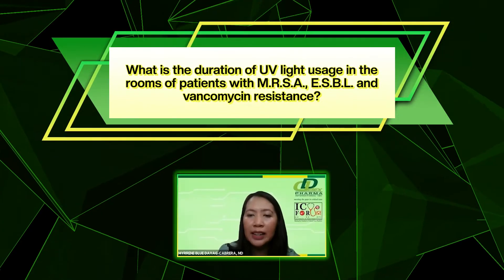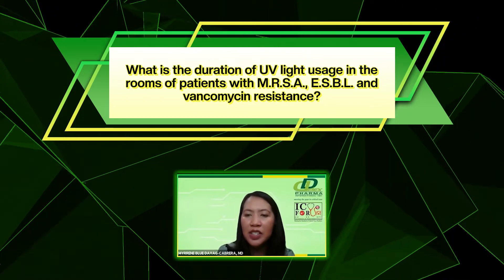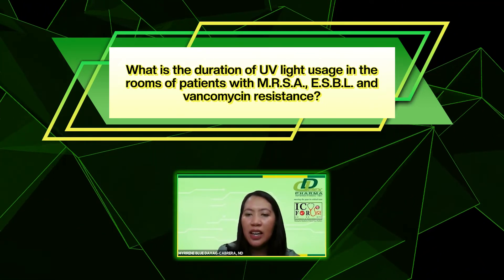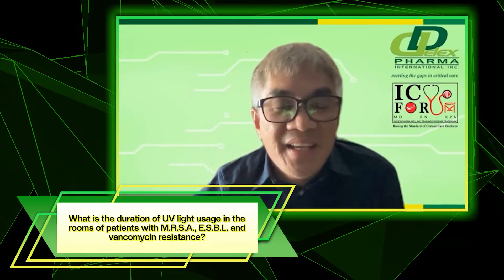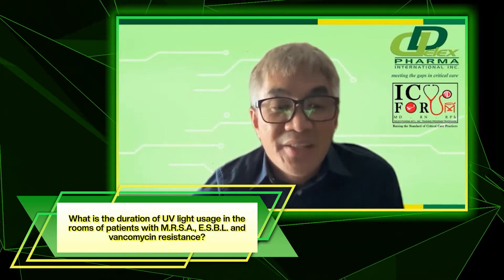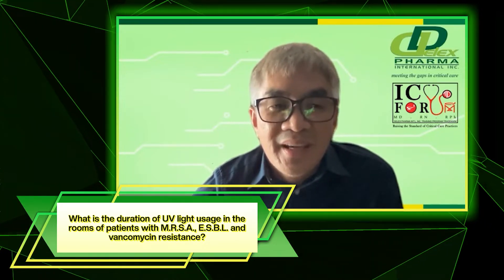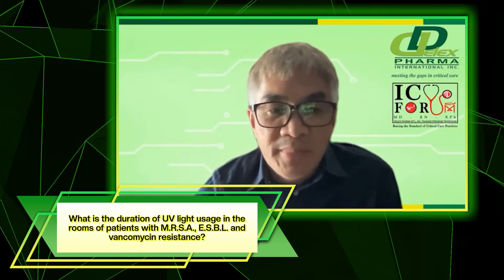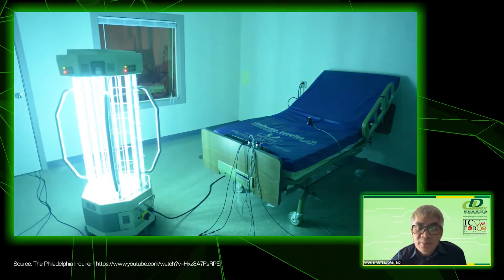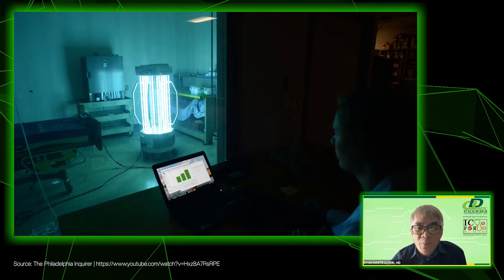How long should UV light be used in a patient's room with MRSA, ESBL, and vancomycin-resistant organisms? There is a manufacturer-recommended duration, so it depends on what type of UV light you are using in your hospital. But UV light is quite fast — it's between 30 minutes to 1 hour. That's one of the advantages in environmental cleaning, which is why they like to use it.